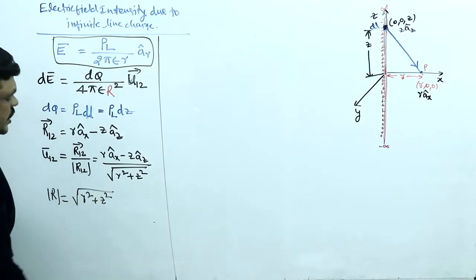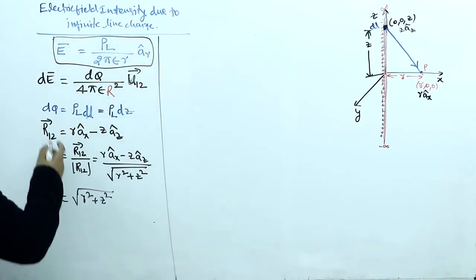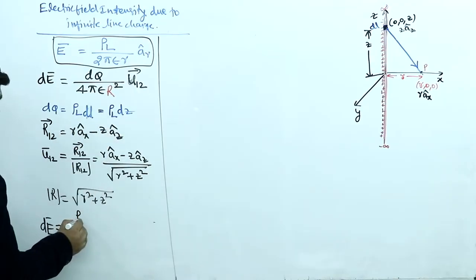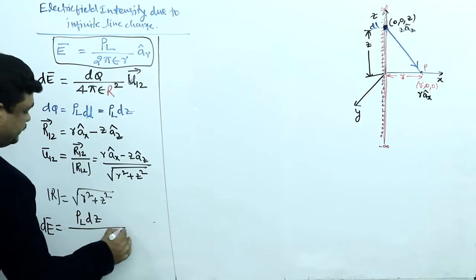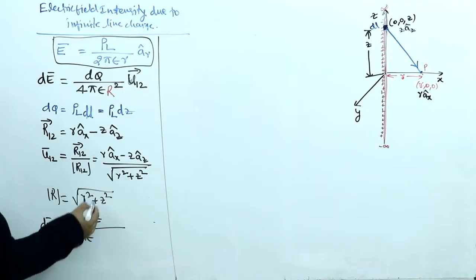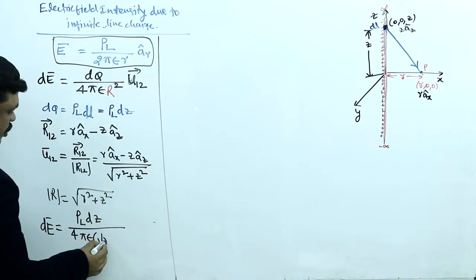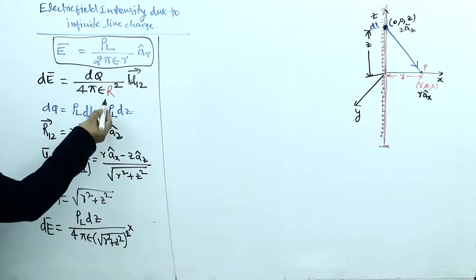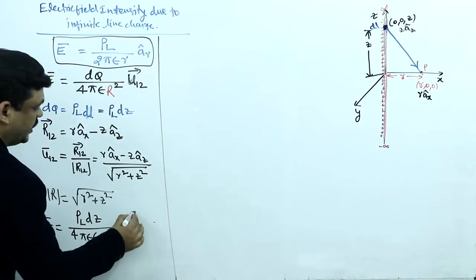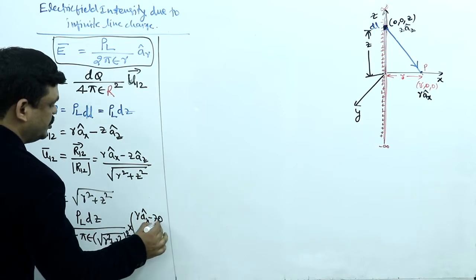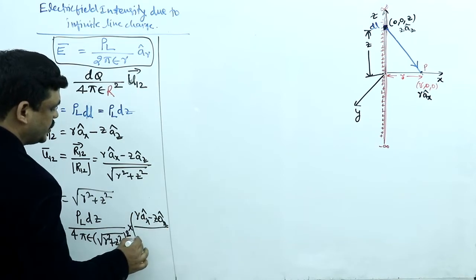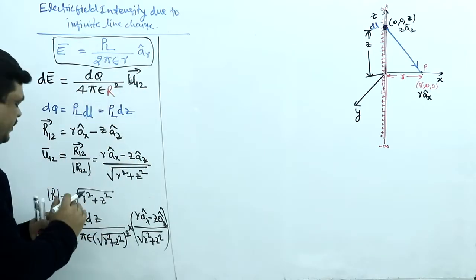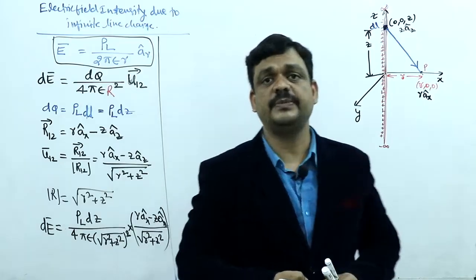Substituting all values into the standard equation: dE = dq / (4πε r²) · unit vector = [ρL · dz] / [4πε (r² + z²)] · [(r·ax − z·az) / √(r² + z²)]. Now we simplify this expression.